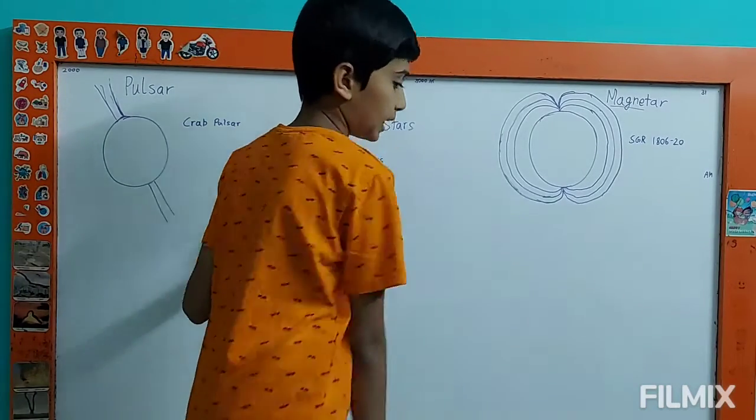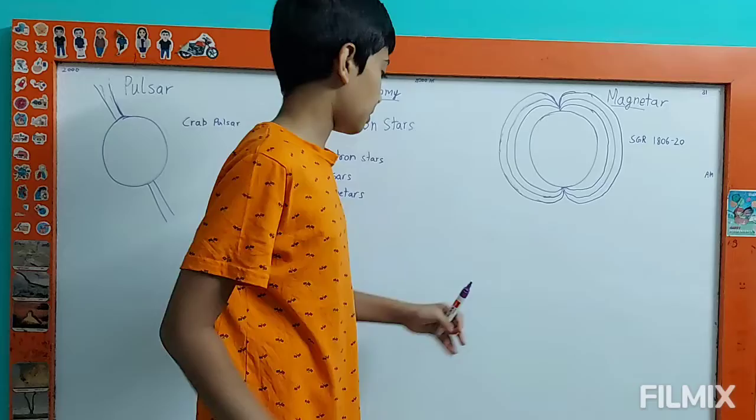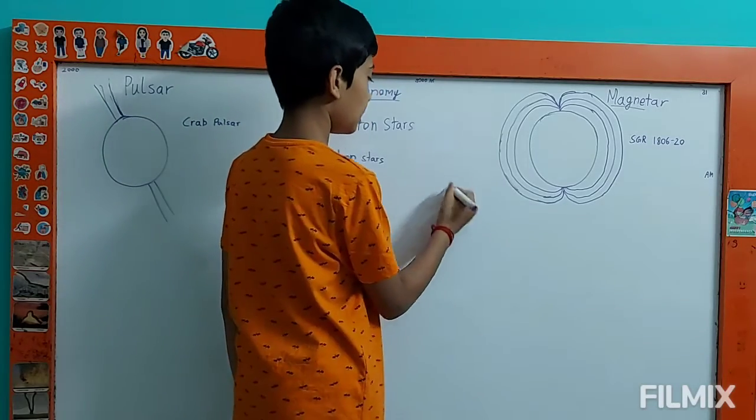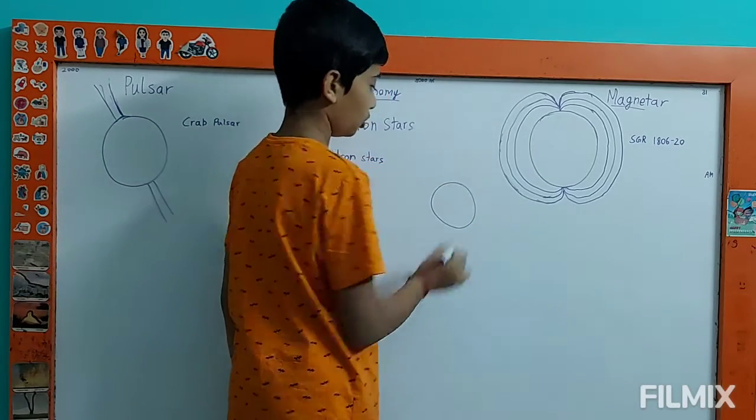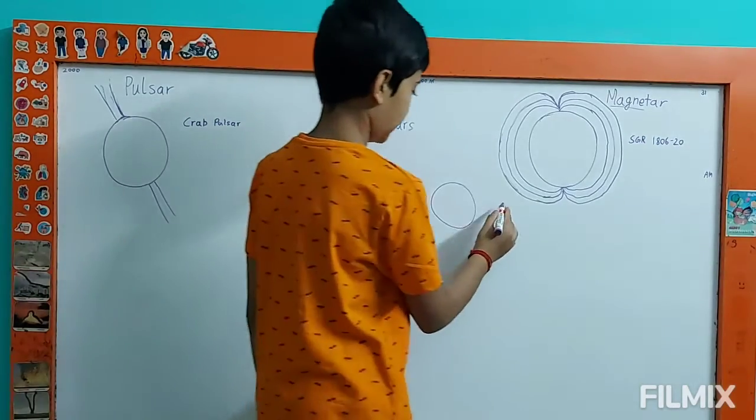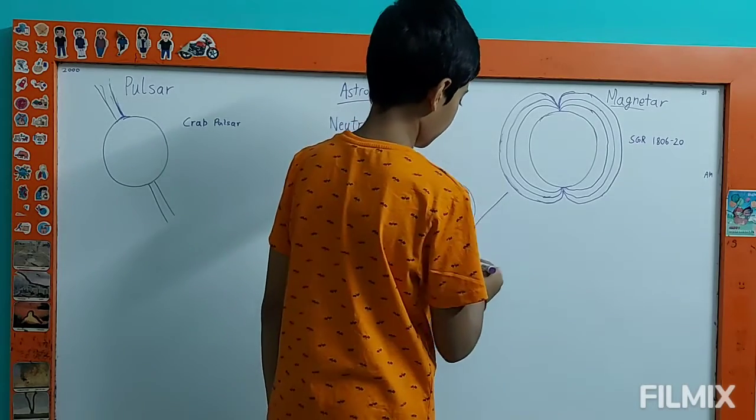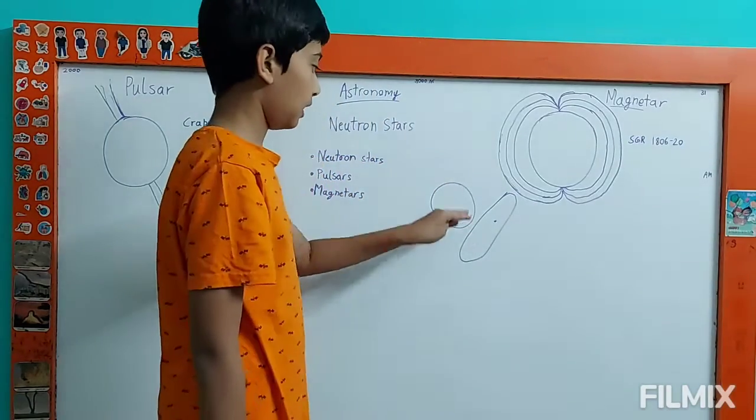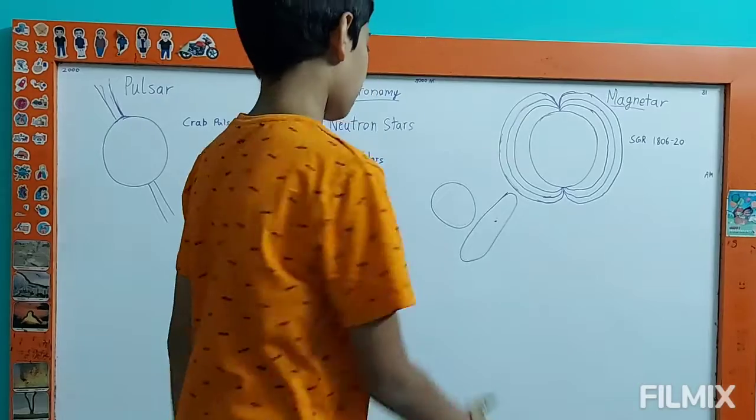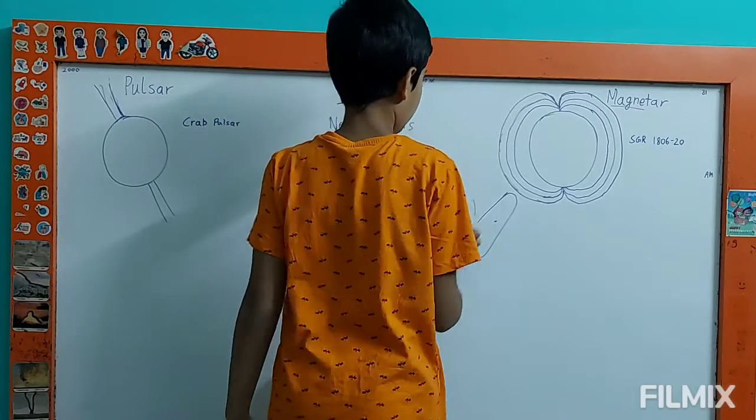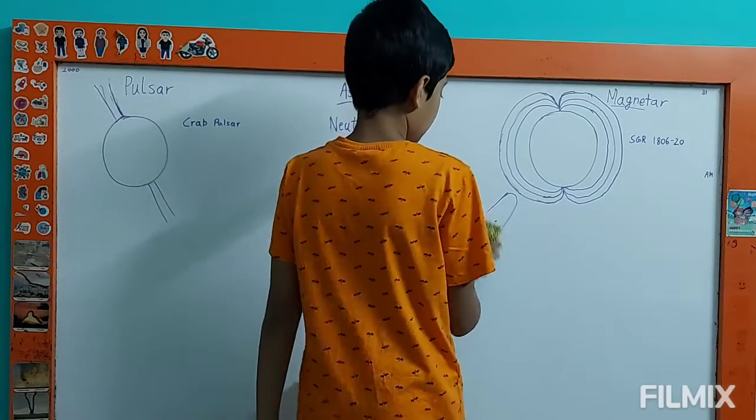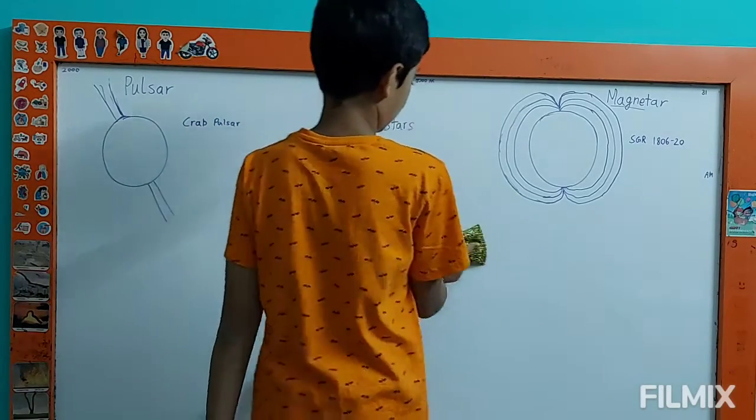If the sun became a neutron star, which has equal mass, the neutron star would be around the size of New York City, maybe a little smaller. But it is very dense. The mass is the same as the sun.